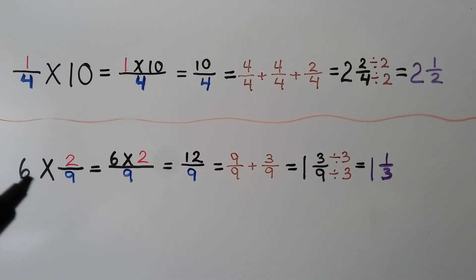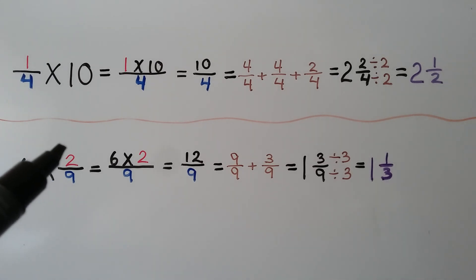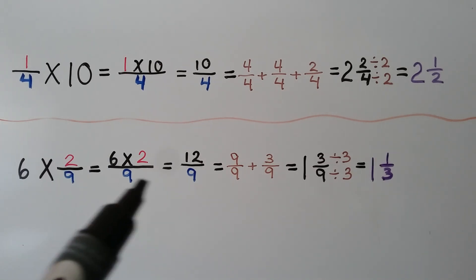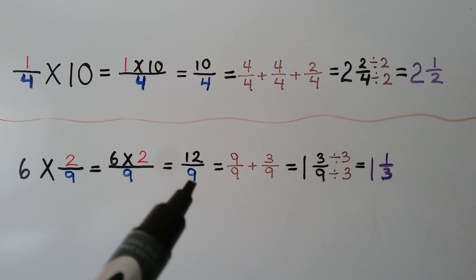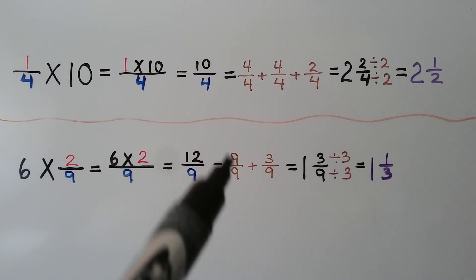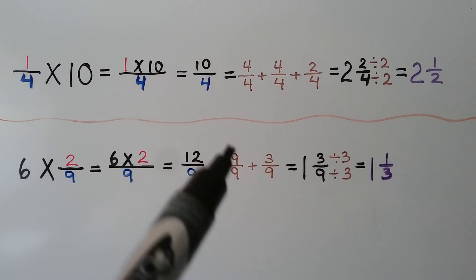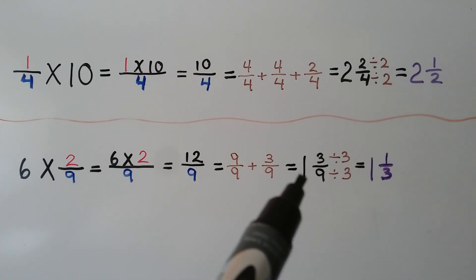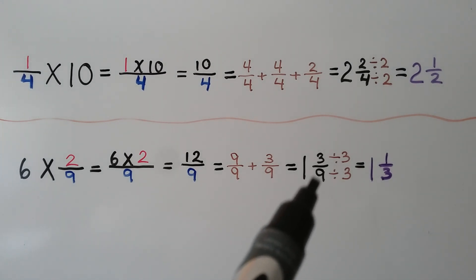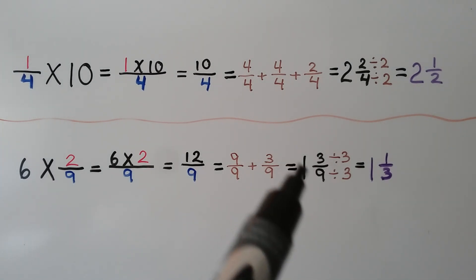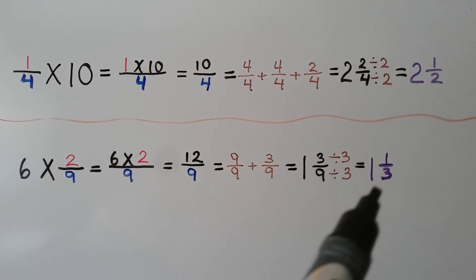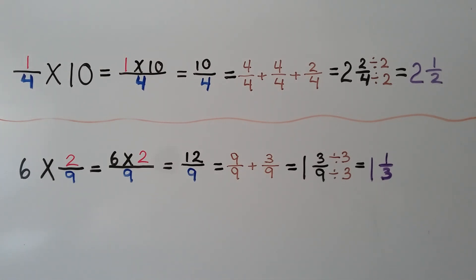Here we have 6 times 2 ninths. We multiply the whole number 6 times the numerator 2. We get 12; we slide the denominator over, we have 12 ninths. That's equal to 9 ninths as 1 whole plus 3 ninths — that's 1 and 3 ninths. In simplest form, we divide the numerator and denominator by their greatest common factor, 3, and we get 1 and 1 third.